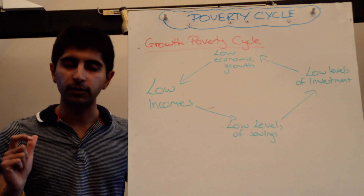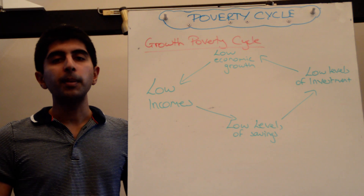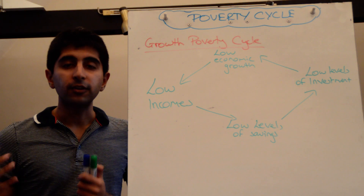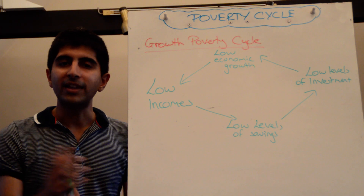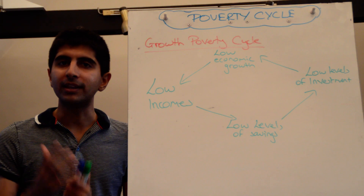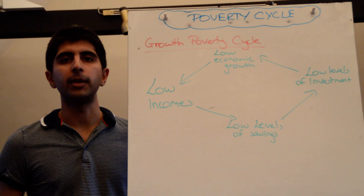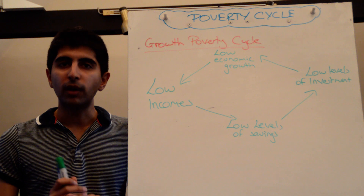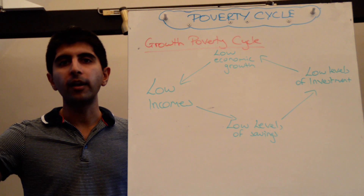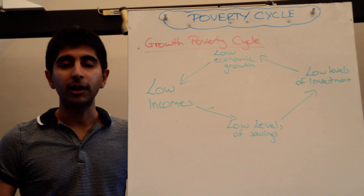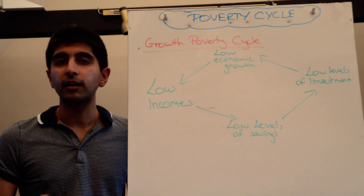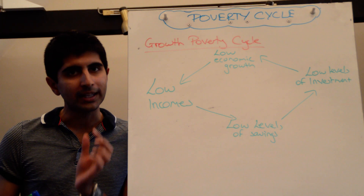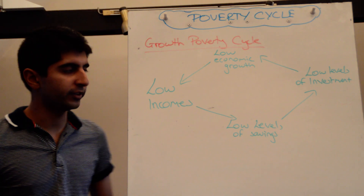If people are living in relative poverty, it means someone's income is less than the average in an economy. So people in the UK may be living in relative poverty, but in other parts of the world that might actually be a luxurious kind of standard of living. So it's all relative to income in an economy — it's relative poverty.